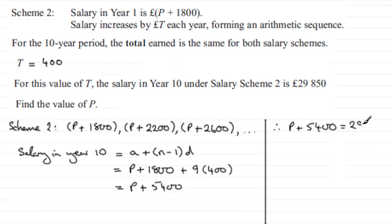So to get P, all I need to do is subtract 5,400 from 29,850, and what does that give me? 24,450.